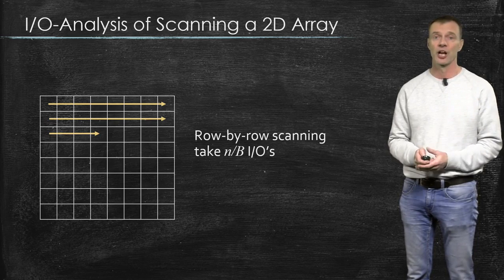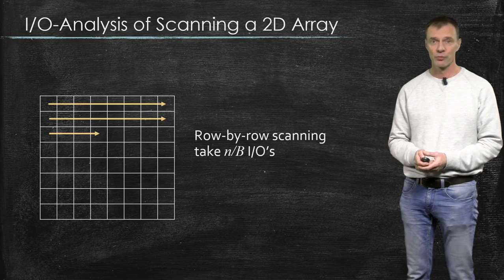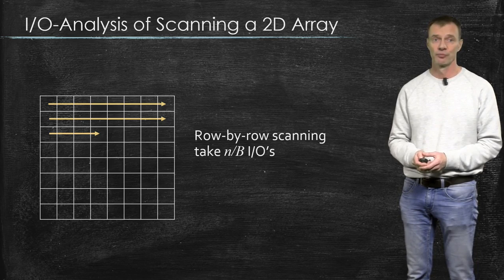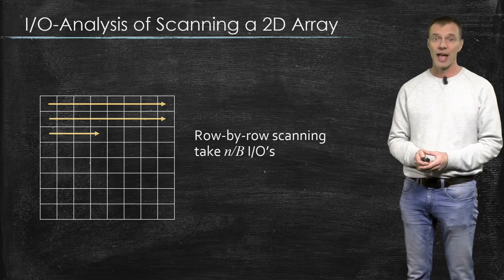As we've seen, to analyze the I/O behavior of this algorithm, it's important to know how the blocks are formed. So if you want to achieve n divided by B I/Os for this algorithm, then you need that the blocks are formed in row-major order.